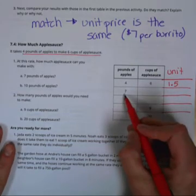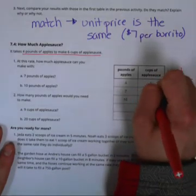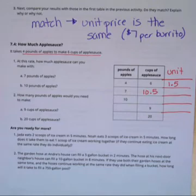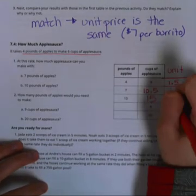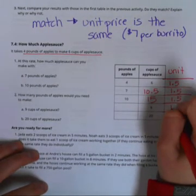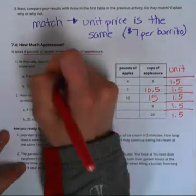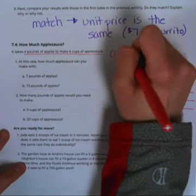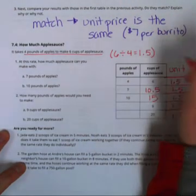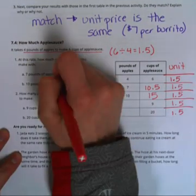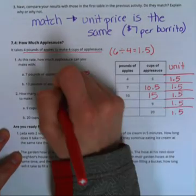Now to fill in our table we can do seven times one point five which would give us ten point five. Ten times one point five would give us fifteen. Remember our unit price is always the same going all the way down. And we found our unit price applesauce by doing six divided by four. That's our unit rate per pound of apple. So seven pounds would be ten and a half cups. Ten pounds would be fifteen cups of applesauce.